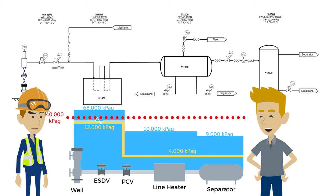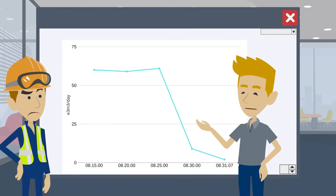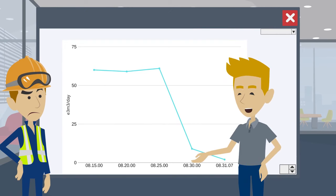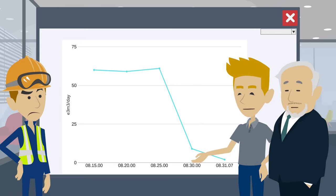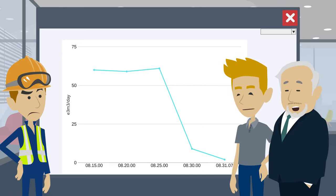Where should we be looking for the cause of the shutdown? The source of pressure for the separator is the well — everything downstream of the separator is of lower or equal pressure. We know that pressure reached the separator and started to build. If we look at the flow trend upstream of the separator, it appears the flow rate suddenly dropped around 8:30 this morning, right before the shutdown. This looks like a blocked flow overpressure case.